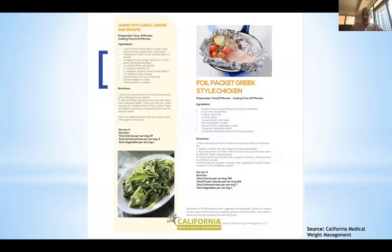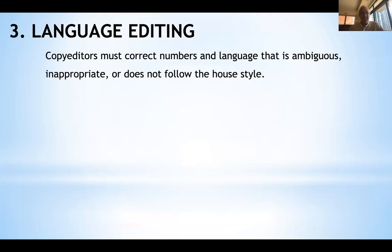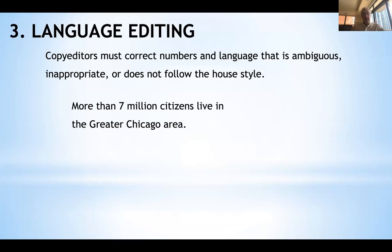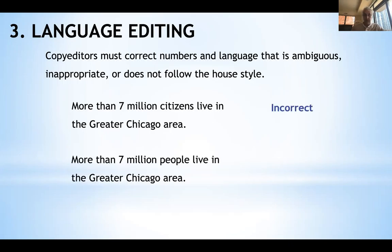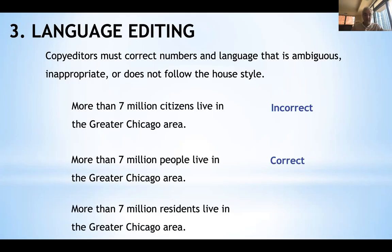The third principle is called language editing. Copy editors must correct numbers and language that is ambiguous, inappropriate, or does not follow house style. For example, 'more than seven million citizens live in the greater Chicago area' — the word 'citizens' is not acceptable, because according to AP style it specifically refers to native-born or naturalized immigrants. Instead, you should write either 'more than seven million people live in the greater Chicago area' or 'more than seven million residents live in the greater Chicago area.'